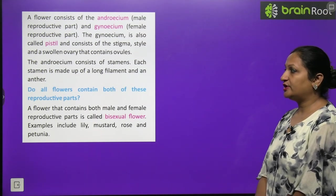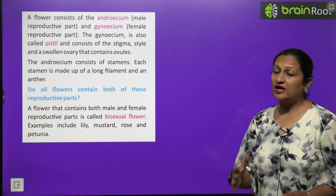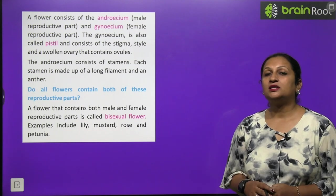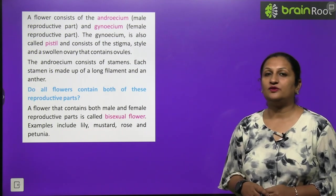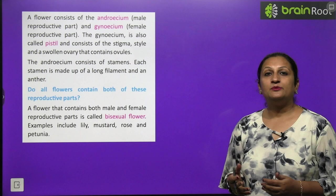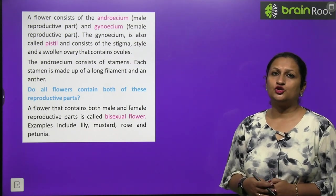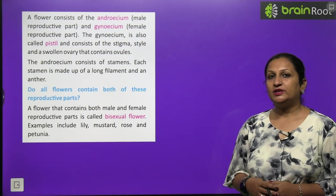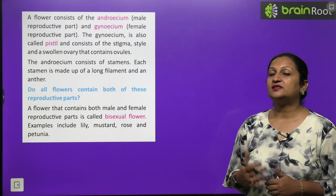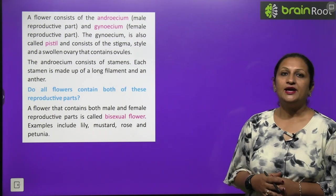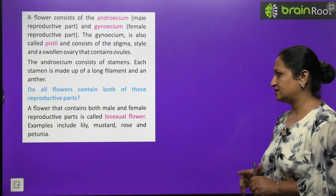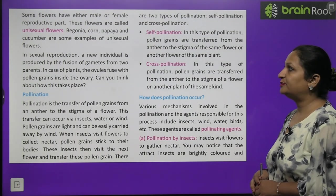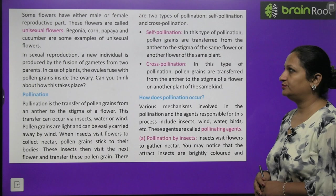Do all flowers contain both the reproductive parts? Yes, some flowers have both male and female parts present, like we just talked about. These we call bisexual flowers, like rose and hibiscus. In these, both parts, their gametes are present. But some flowers have either only male part present or only female part present. Such flowers we call unisexual flowers, like corn, begonia, papaya, cucumber are the examples of such plants.